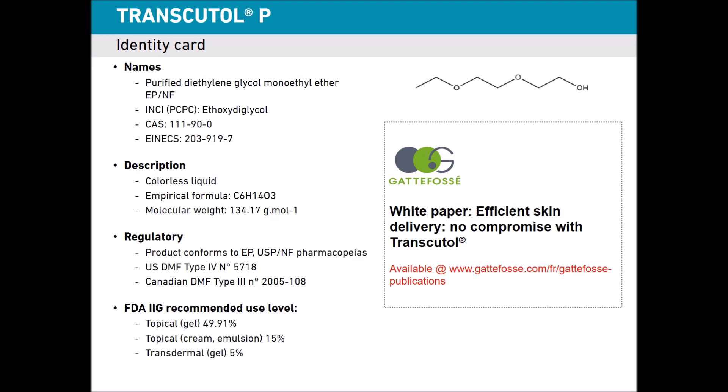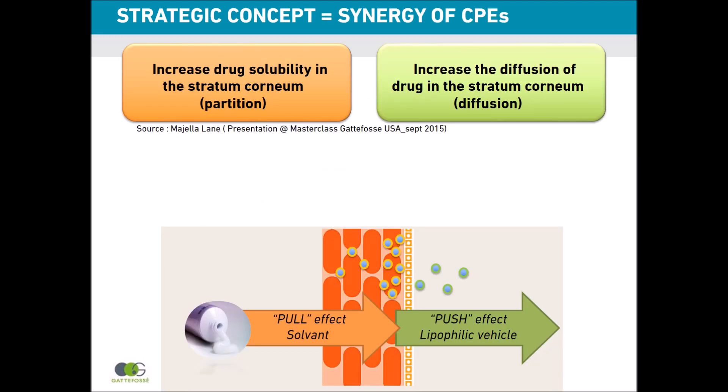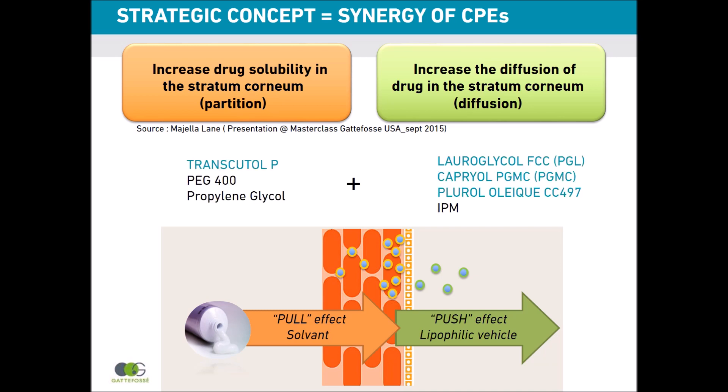Once formulation rule number one is completed, you have to consider the two other rules: number two and number three — partition and diffusivity. The drug must leave the formulation to go into the stratum corneum, and once it reaches the first layer, it has to diffuse through it. To increase drug partition into the stratum corneum, you need to increase drug solubility in the stratum corneum by selecting specific excipients that penetrate the skin and drag the drug in — this is the case for Transcutol P, PEG-400, or propylene glycol.